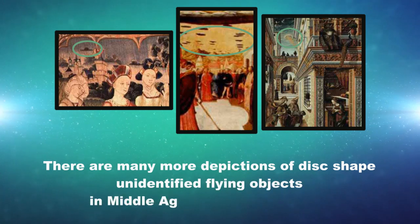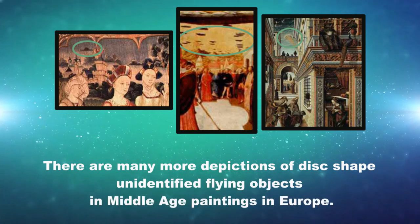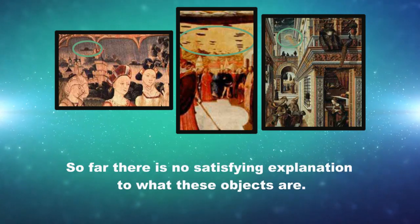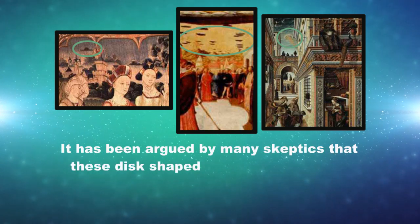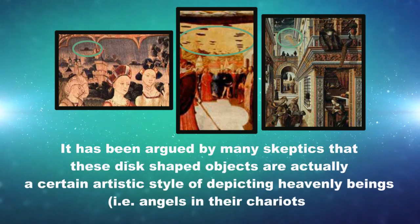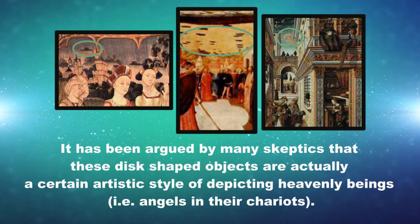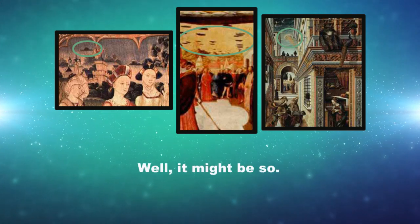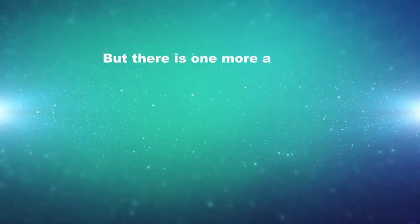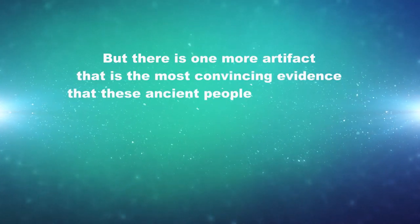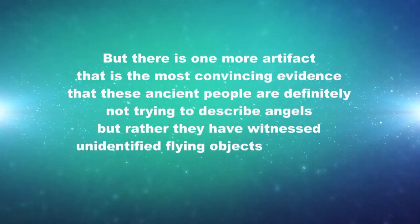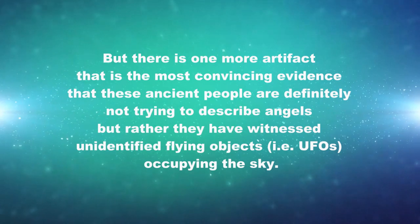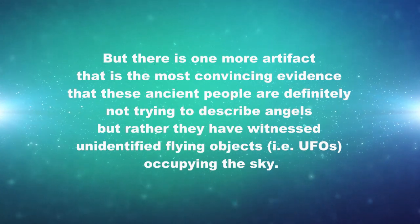There are many more depictions of disc-shaped unidentified flying objects in Middle Age paintings in Europe. So far there is no satisfying explanation for what these objects are. It has been argued by many skeptics that these disc-shaped objects are actually a certain artistic style of depicting heavenly beings, such as angels, in their chariots. Well, it might be so. But there is one more artifact that is the most convincing evidence that these ancient people are definitely not trying to describe angels, but rather have witnessed unidentified flying objects — i.e. UFOs — occupying the sky.